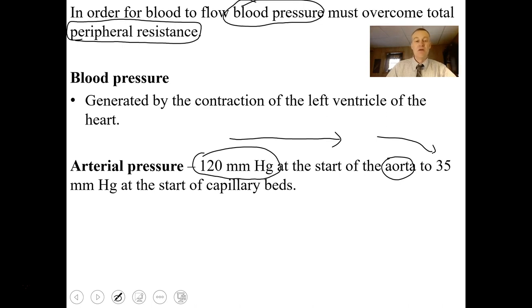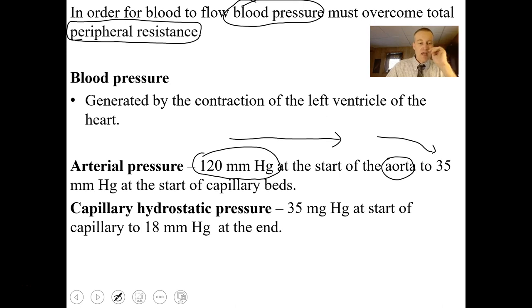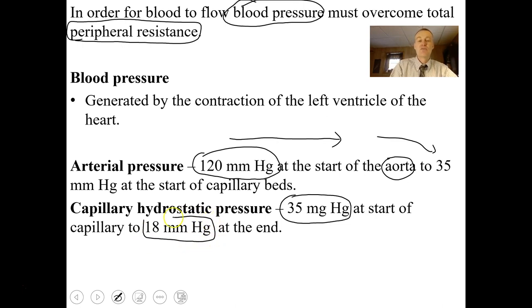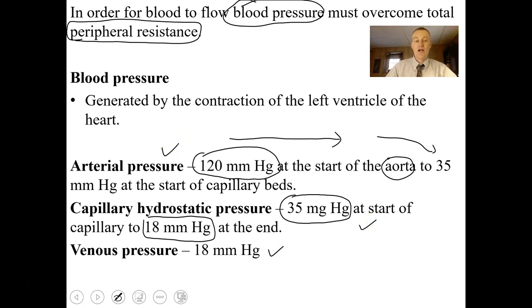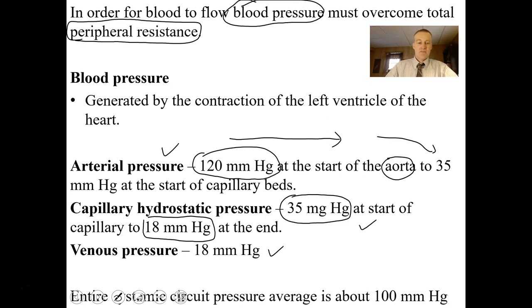A lot of pressure is lost by the time blood gets to a capillary bed. Capillary hydrostatic pressure is about 35 millimeters of mercury at the beginning of the capillary bed and 18 millimeters of mercury at the end. Venous pressure averages about 18 millimeters of mercury. So veins are under very low pressure, capillaries under low pressure, but arteries under very high pressure. The entire systemic circuit pressure averages about 100 millimeters of mercury.